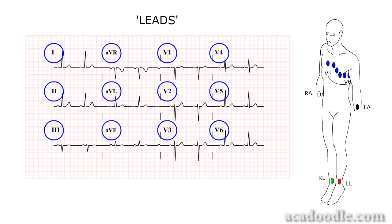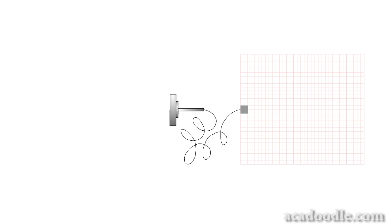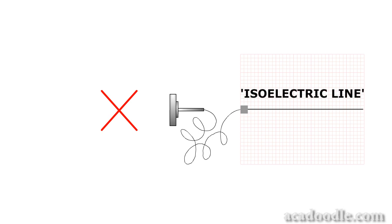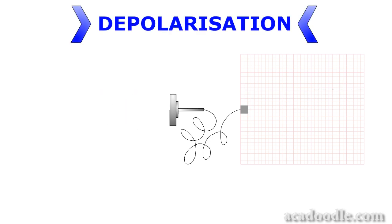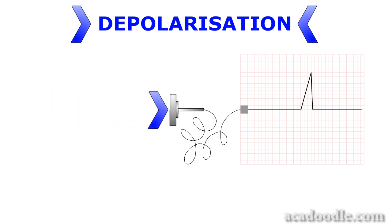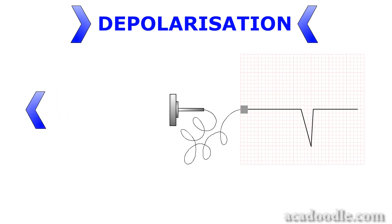We'll see how this works later, but for now we need to understand how an individual ECG lead analyses and records cardiac electrical events. In any ECG lead, the flat line recorded on the readout when no net current is flowing in its direction is termed the isoelectric line. It is very important to realise that all of the leads on the ECG machine are set up in such a way that depolarising current moving towards a lead produces a deflection on the ECG paper above the isoelectric line — a positive deflection — while depolarising current moving away from the lead produces a deflection below the isoelectric line — a negative deflection.